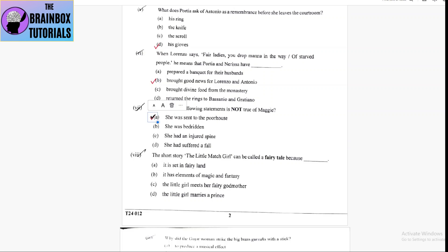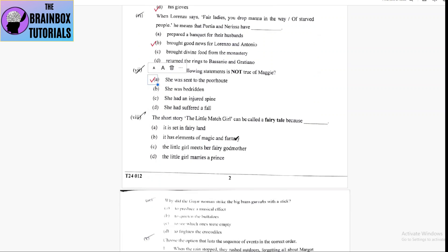She was not sent to the poor house. Joe was planning to send her to the poor house, but she was not sent. So, option number A is correct. Next, number 8,